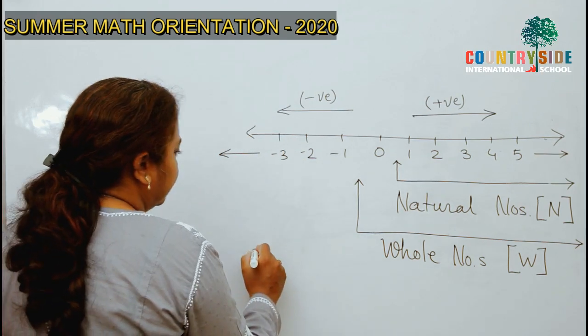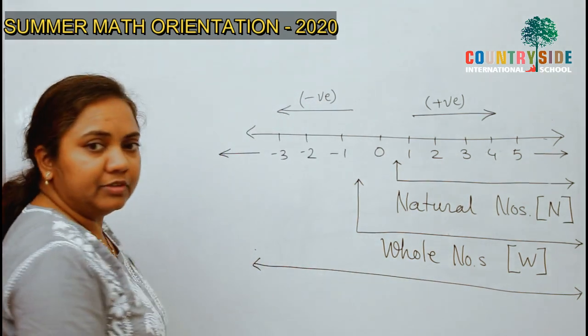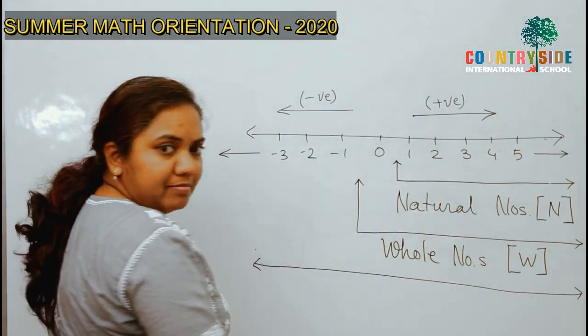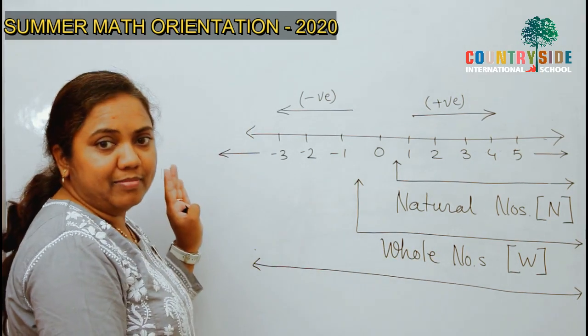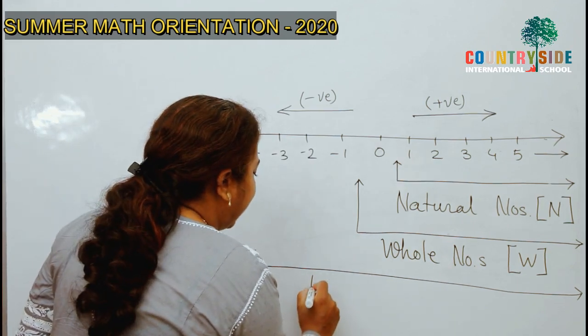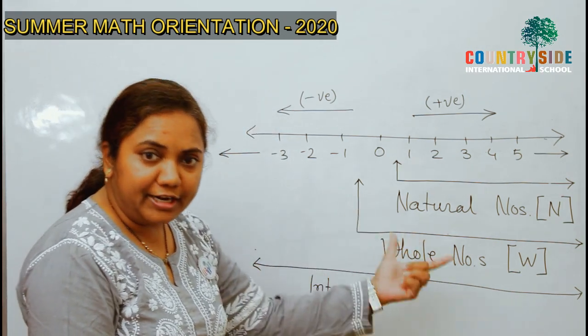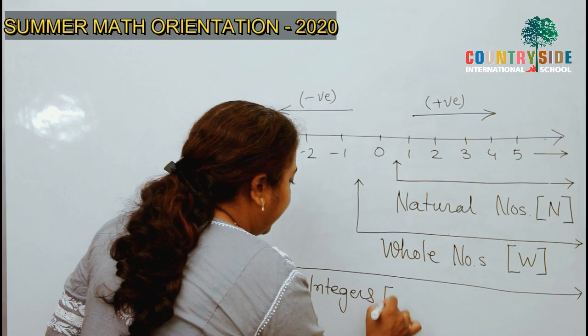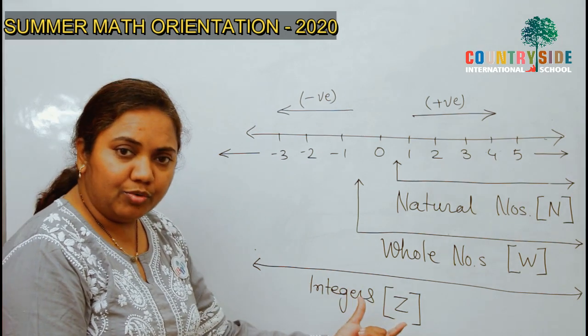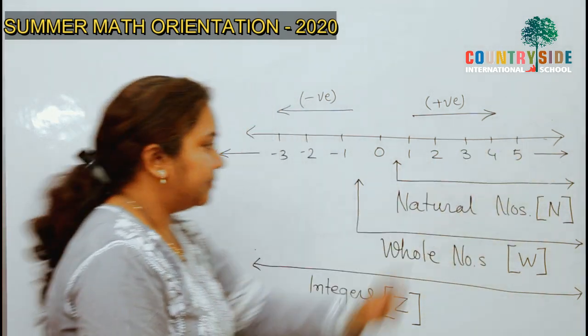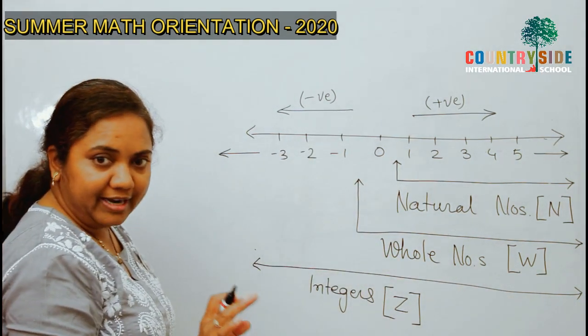Now, a set which includes natural numbers, whole numbers and all negative numbers is called set of integers. What? Set of integers. We denote it by capital Z. What does Z include? All positive numbers, all negative numbers and 0. Fine? Good.